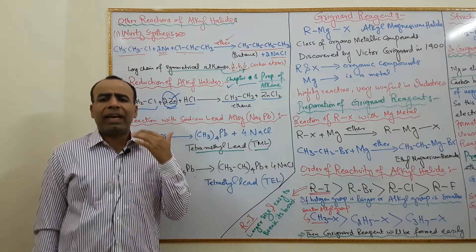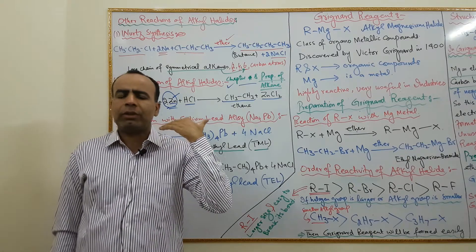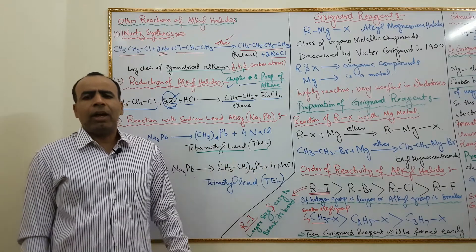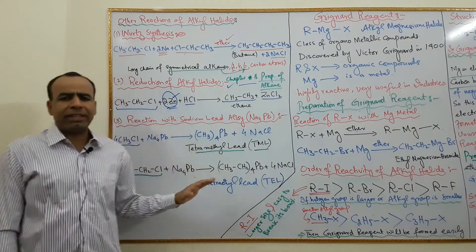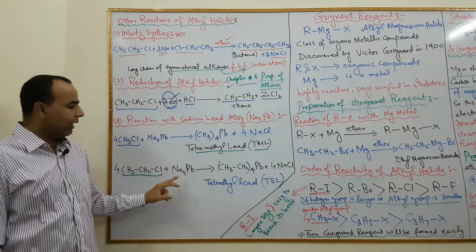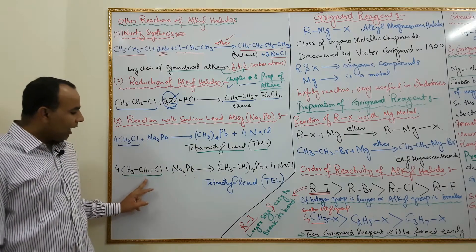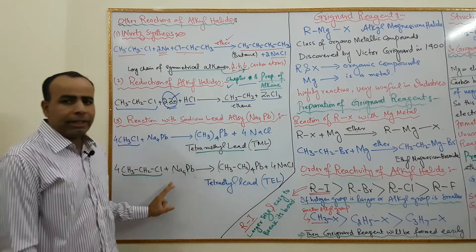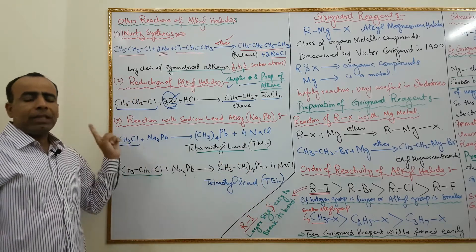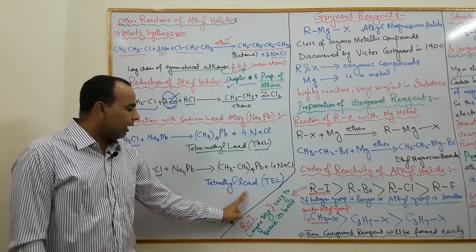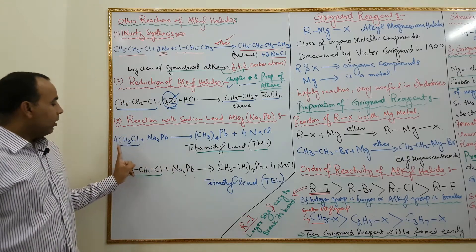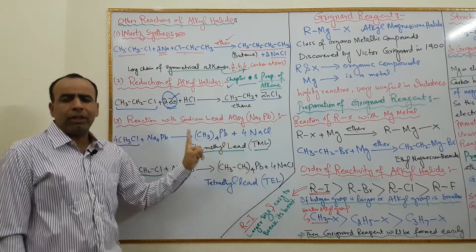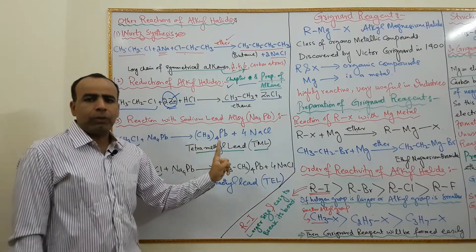Tetra ethyl lead (TEL) is an important component of anti-knocking agent. This has been studied in detail in Chapter 7. An important conversion question from the board paper point of view is: convert ethyl chloride into tetra ethyl lead, and convert methyl chloride into tetra ethyl lead.